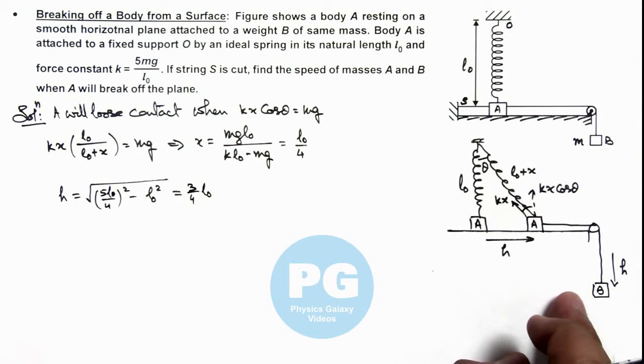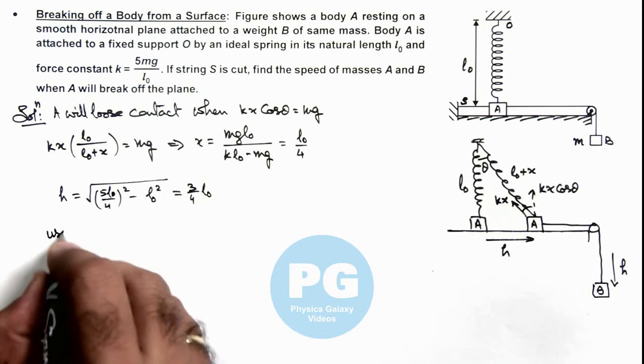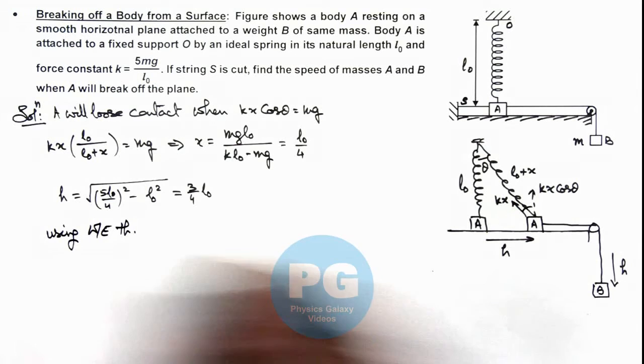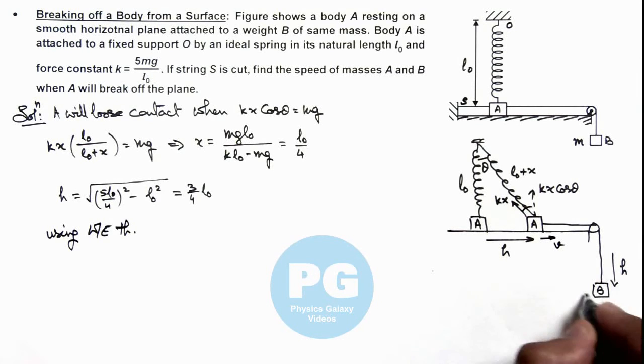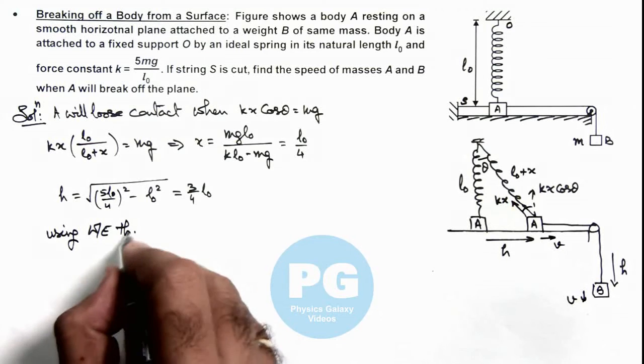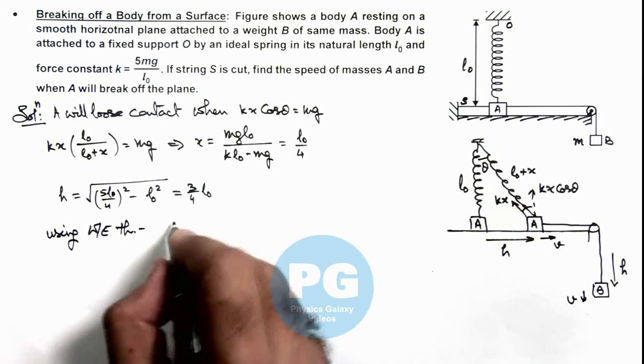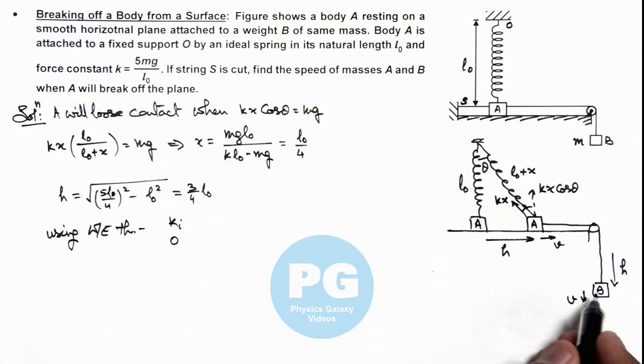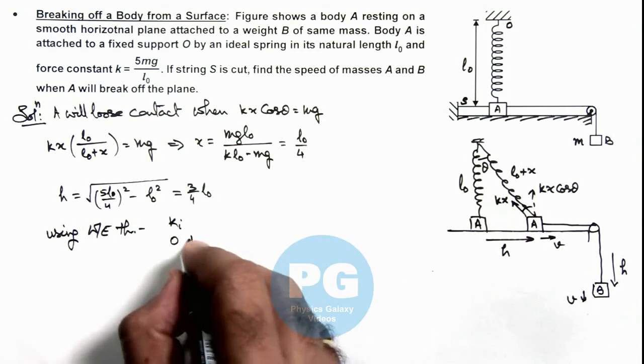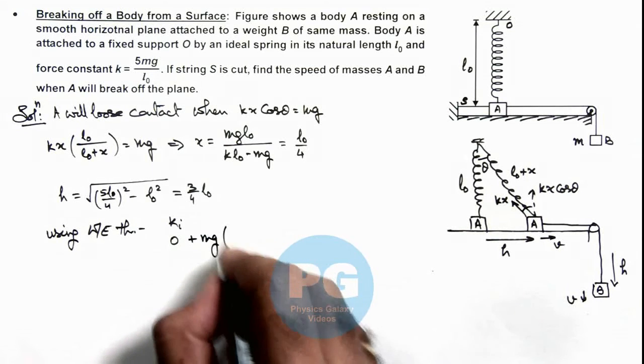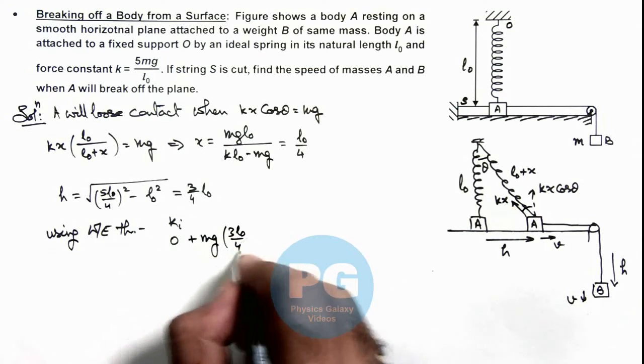Now using the work-energy theorem, we can calculate the speed with which the two blocks are moving. The initial kinetic energy of the system is zero. After falling by distance h, the work done by gravity on block B is +mgh = mg(3l₀/4), minus